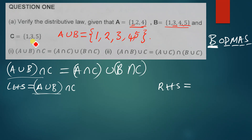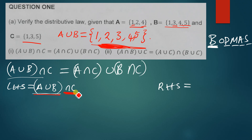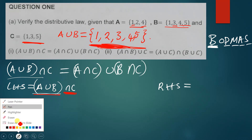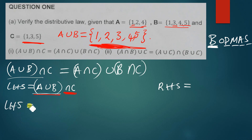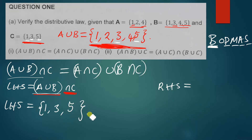C has been given as one, three, five. So now we find the intersection of A union B and C — meaning we look for the common elements in both sets. The common elements are one, three, and five. So the left hand side equals one, three, five.